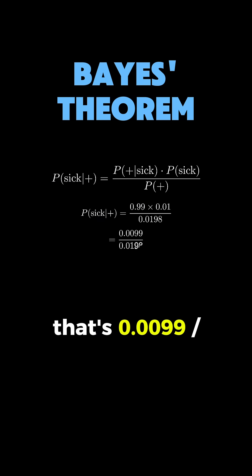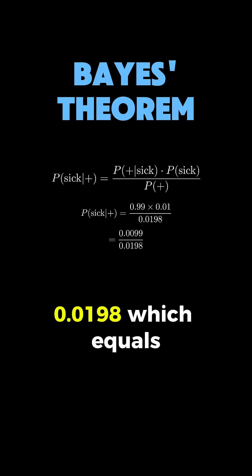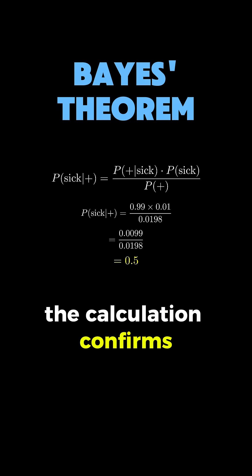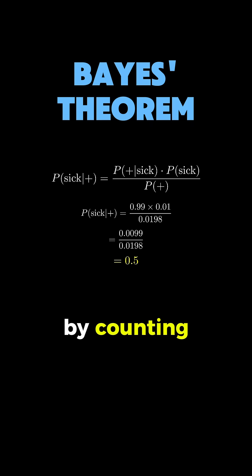That's 0.0099 divided by 0.0198, which equals exactly 0.5 or 50%. The calculation confirms what we discovered by counting. You have a 50-50 chance of actually being sick if you test positive.